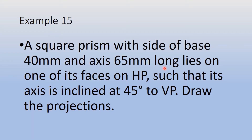Example 15: A square prism with side of base 40 mm and axis 65 mm long lies on one of its faces on the HP such that its axis is inclined at 45 degrees to VP. Draw the projections. So here we have a square prism of base 40 mm side and axis height 65 mm, and it is lying on the HP on its faces. The square prism will not stand on the HP but will lie on it, and the axis is inclined at 45 degrees to VP — so the prism will be tilted with respect to the vertical plane. We will see how to imagine this.